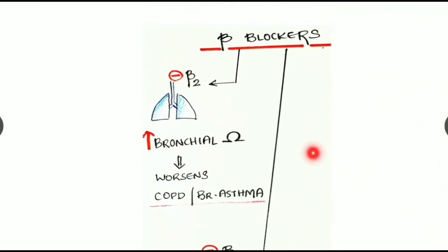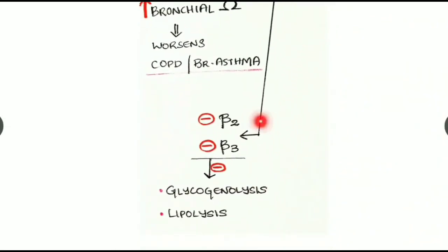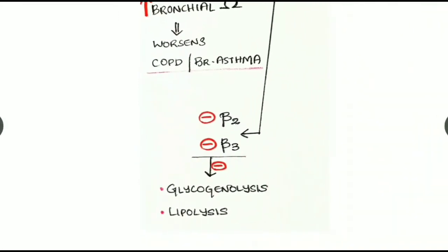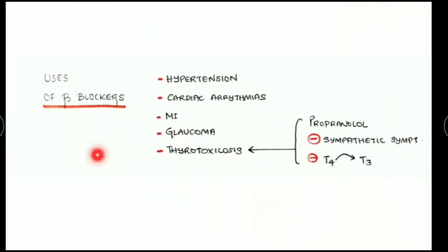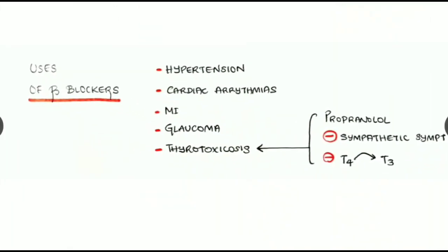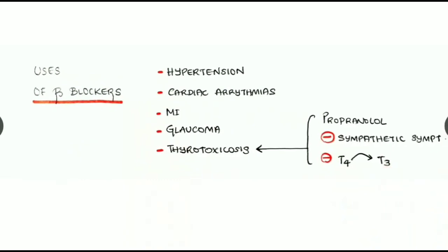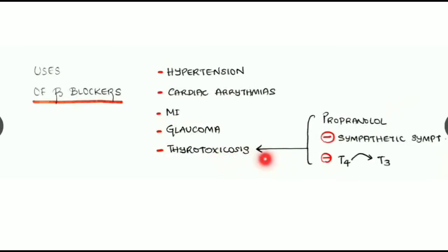Beta blockers also block beta-2 and beta-3 activity, causing inhibition of glycogenolysis and lipolysis. Uses of beta blockers include hypertension, cardiac arrhythmias, myocardial infarction, glaucoma, and thyrotoxicosis.